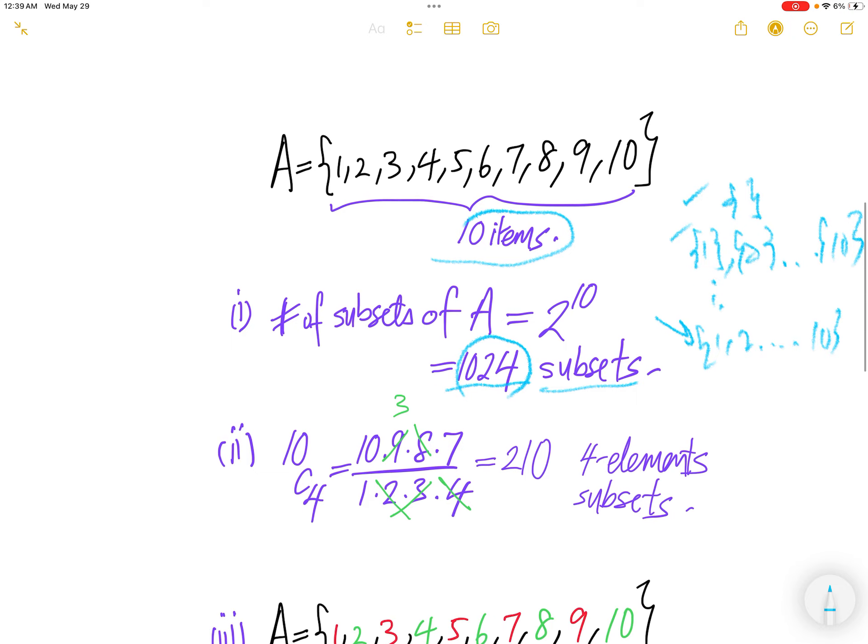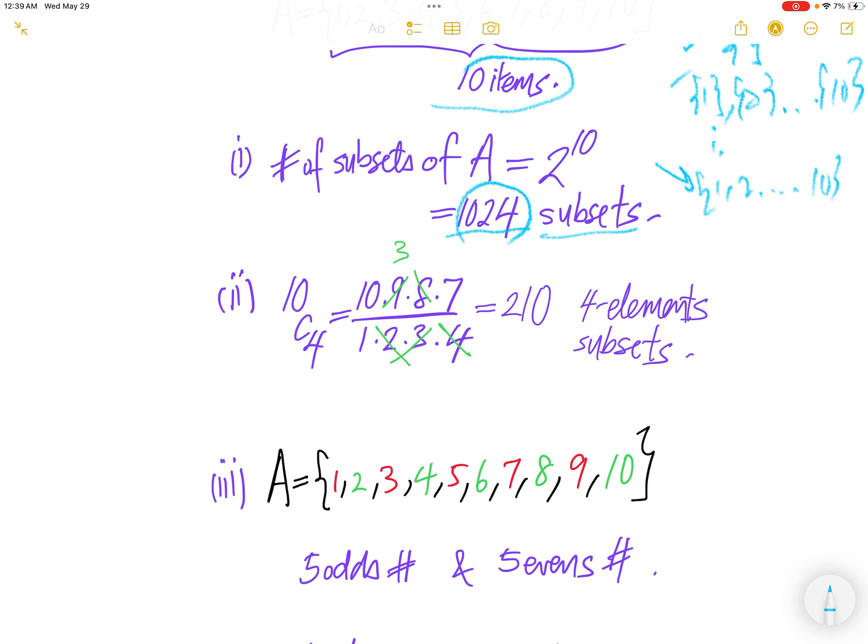Now part 2, how many 4 element subsets are there? 4 element subsets meaning you have 10 items and then you now pick any 4 items from the set of 10.